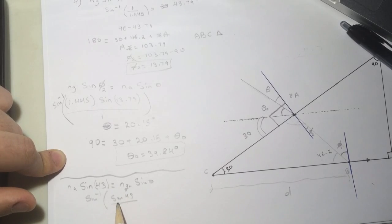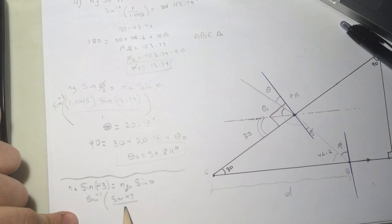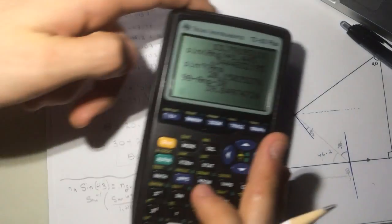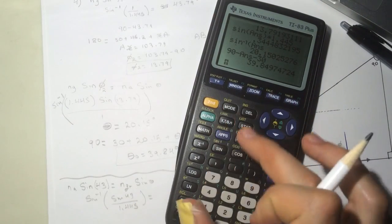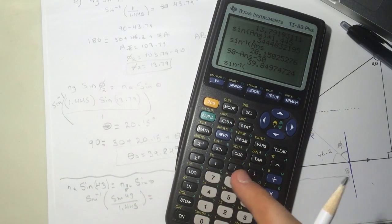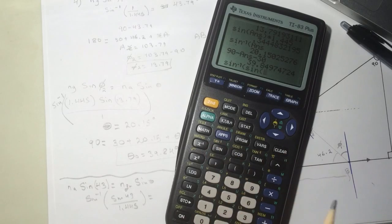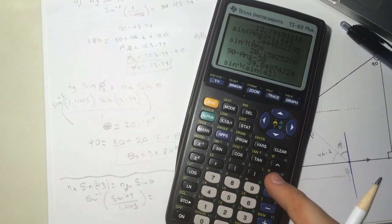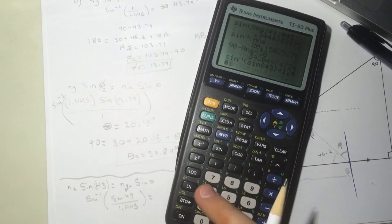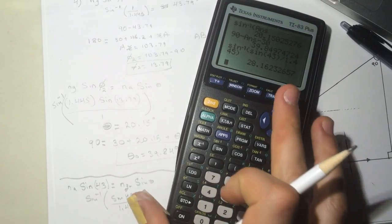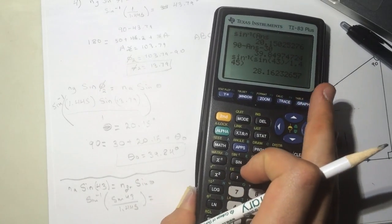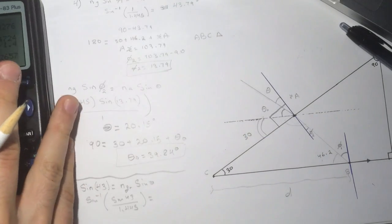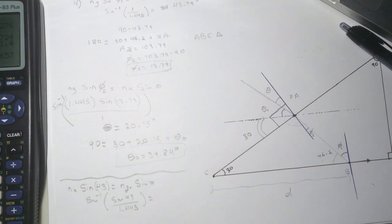It was 1.445. So let's see this guy. Sine inverse of sine 43 divided by 1.445, and we got 28.26. Is that correct?